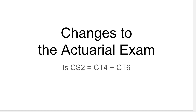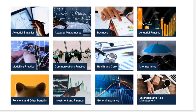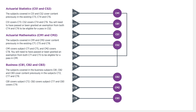Hi everyone, it's MJ the fellow actuary. In this video I want to talk about the changes to the actuarial exams — mainly whether this new subject CS2 is simply the addition of CT4 and CT6. The actuarial exams changed quite considerably in 2019, restructured so they fall into topic areas. Before, we just had subjects CT1 to CT9, and I thought it was a nice layout because you'd do CT1, then CT2, CT3, and each subject helped you move on to the next.